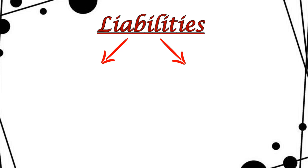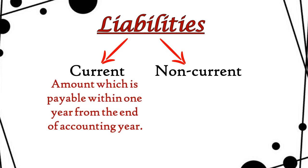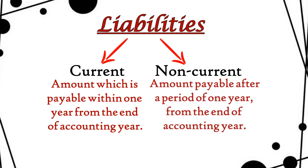Liability is classified into two parts: current liability and non-current liability. If the bank loan of 50,000 has to be paid by Mukesh within one year, then it is a current liability. But if the loan has to be paid in 2-3 years, i.e., after one year, then it is called non-current liability.